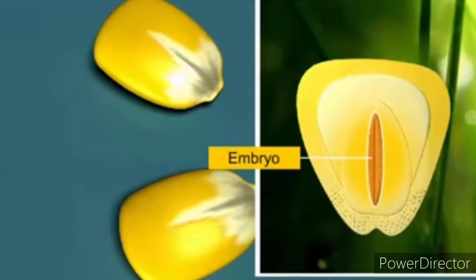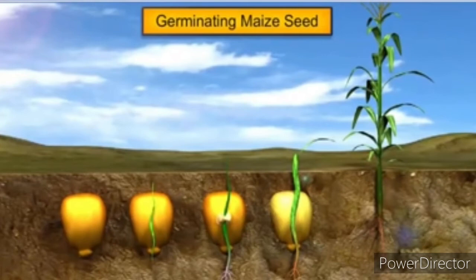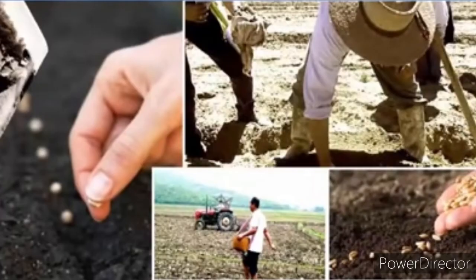The hard seed coat provides protection to the young embryo. Being products of sexual reproduction, seeds generate new genetic combinations leading to variations. Until seedlings can photosynthesize their own food, they are supported by the endosperm for nutrition. Seed is the basis of agriculture. Dehydration and dormancy of mature seeds are crucial for storage, which can be used as food throughout the year and to raise crops in the next season.